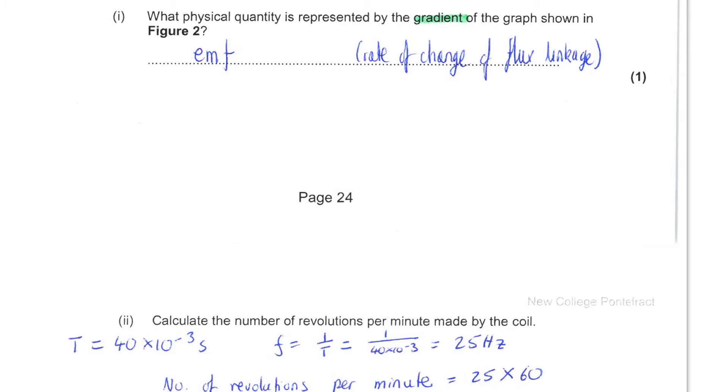Next, your attention is drawn to a graph, and you are told that this is no longer the same starting position of the coil. The graph shows how the flux linkage through the coil varies with time. You are asked for what physical quantity is represented by the gradient of the graph. This is just testing your knowledge of Faraday's law that the size of the induced EMF is equal to the rate of change of flux linkage. So the gradient of this graph is the size of the induced EMF.